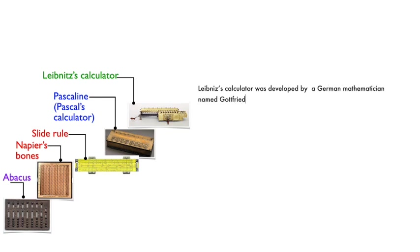Leibnitz's calculator was developed by German mathematician Gottfried Leibnitz. The mechanical device was an improvement of the Pascaline. It was able to multiply and divide.